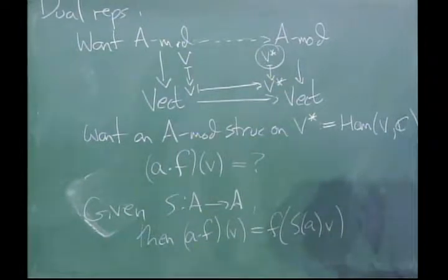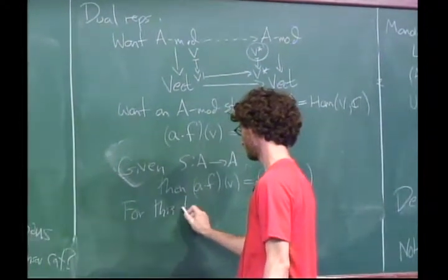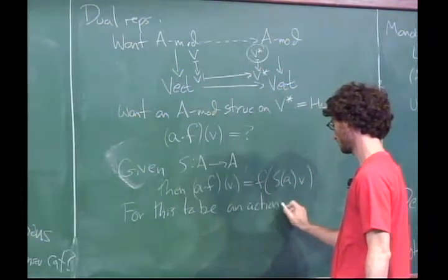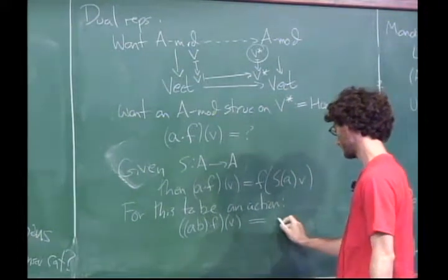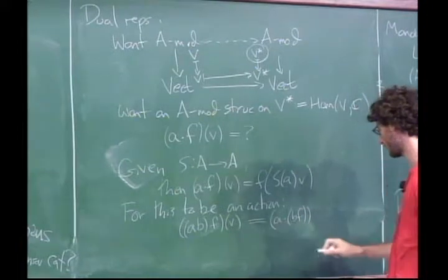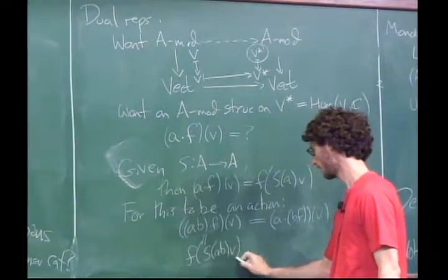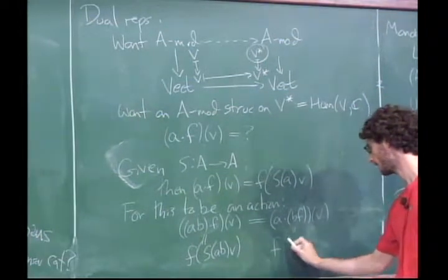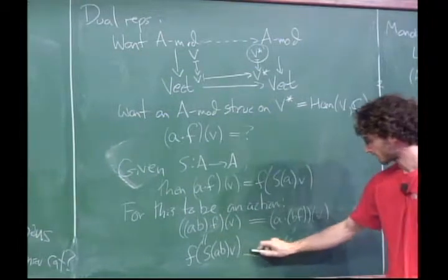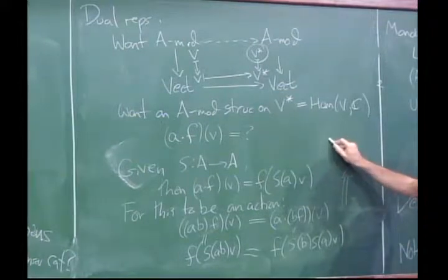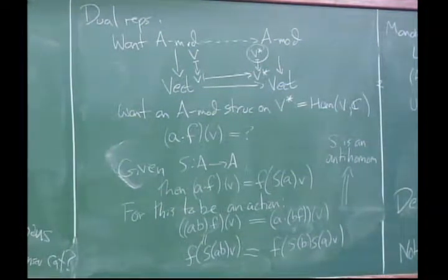We need to ensure this really is an action. For this to be an action, acting by AB on F and evaluating ought to equal first acting by B and then by A. Here we get F(S(A)B acting) and over here we get F(S(B) S(A) v). So if we want these two things to be equal, what we need is that S is an anti-homomorphism of the algebra structure — that is, S(AB) = S(B)S(A). S is called the antipode.